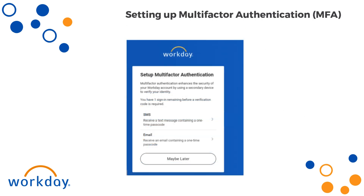To keep your account secure, Workday requires multi-factor authentication, or MFA. You'll be prompted to choose an MFA method — either text message or email. You only need to set up multi-factor authentication using one of the two options. The MasterCorp preferred option is via SMS text; however, you may use your email to set up MFA if you prefer. Do not select 'maybe later' — you only have one login attempt and will get locked out of Workday. We will now walk through setting up MFA through SMS and through email.